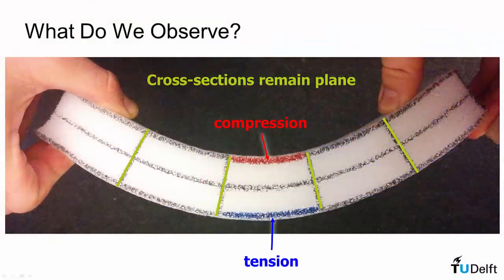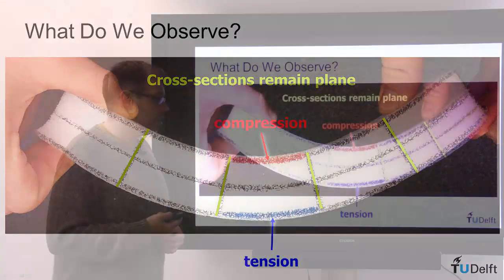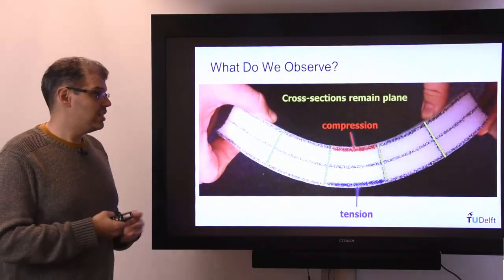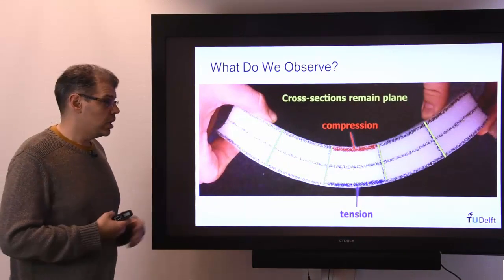Conversely, on the convex curved side of that beam, the blue line has to be elongated, so there must be a state of tension in that blue line.